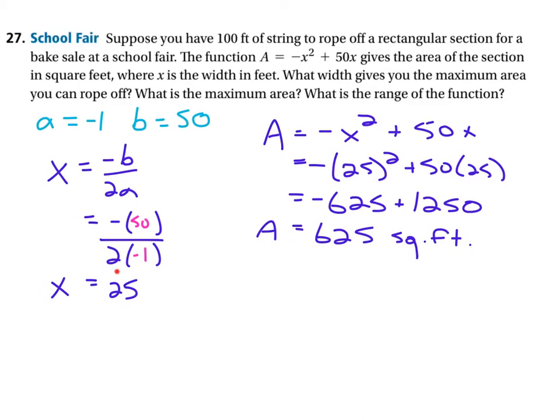and calculated that x equals 25 is the line of symmetry, and that means that our vertex point, our high point, is going to have an x coordinate of 25, and that says the width is in feet 25.